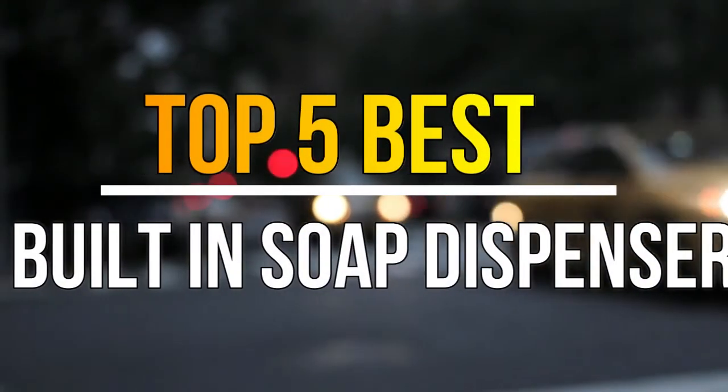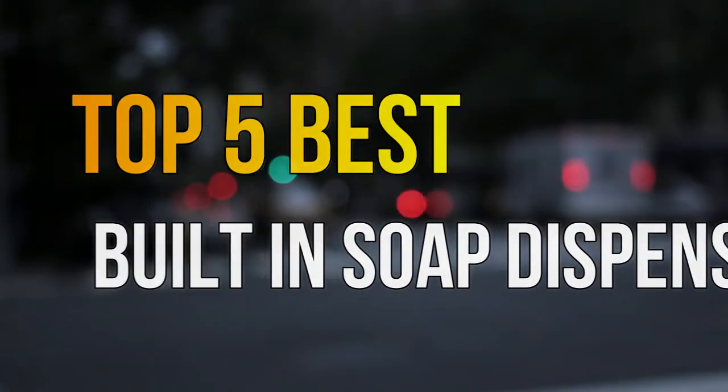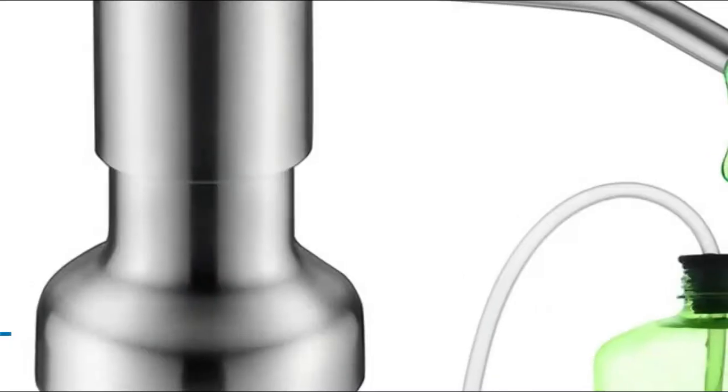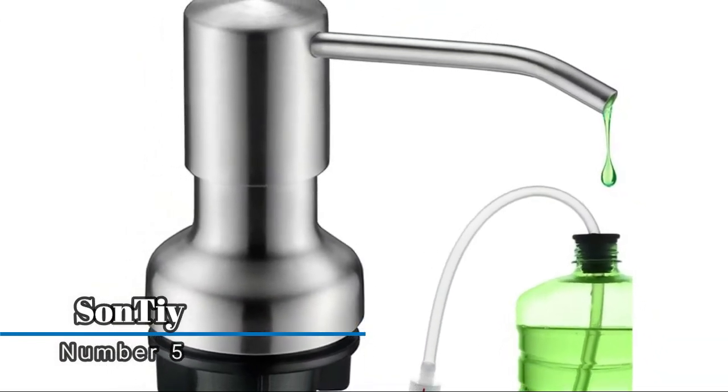Hello guys, today in this video we are going to help you find out the best built-in soap dispenser in the market. Let's get started with the video. Number five: Sun Tea, the soap dispenser for kitchen sink and tube kit.